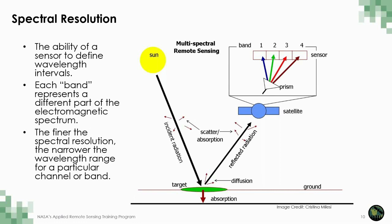As a review, optical sensors use the energy from the sun and record the reflected radiation from various surfaces on the ground. Reflectance occurs along the electromagnetic spectrum and the sensor picks up the reflected energy along various wavelength intervals. The spectral resolution is the ability of a sensor to define wavelength intervals. The wavelength intervals can be wide, covering a larger range of frequencies, or narrow, covering a small range of frequencies. Each band or wavelength range represents a different part of the electromagnetic spectrum. The finer the spectral resolution, the narrower the wavelength range for a particular channel or band.